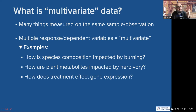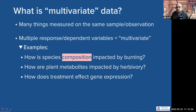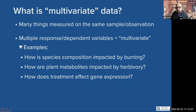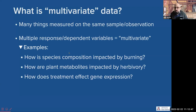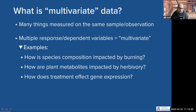Species composition is our response, and it's not just one variable — it is as many variables as there are species. The observations might be presence/absence, abundance values, or area on the forest floor. Or how are plant metabolites impacted by herbivory? Plants make hundreds or thousands of metabolites, so this is a multivariate problem. Or how does some treatment affect the gene expression of an organism?